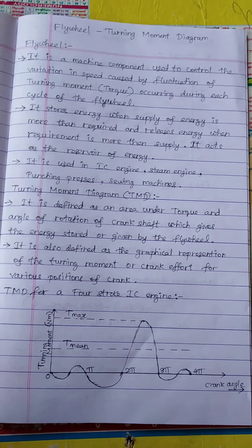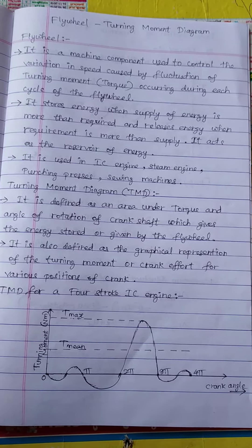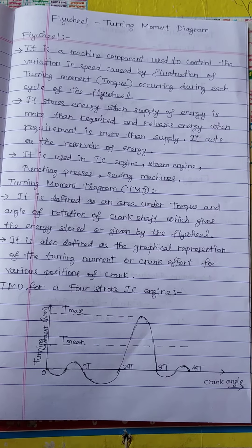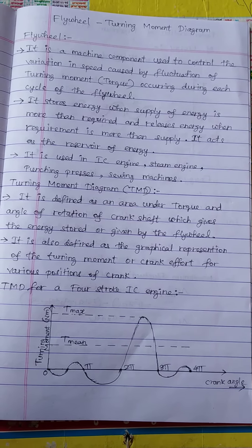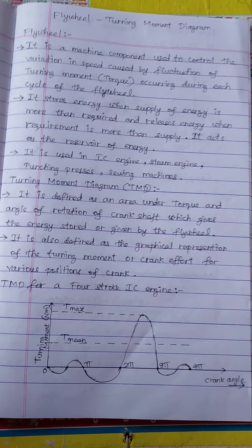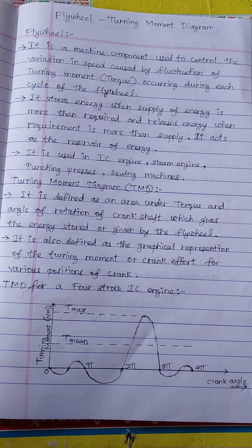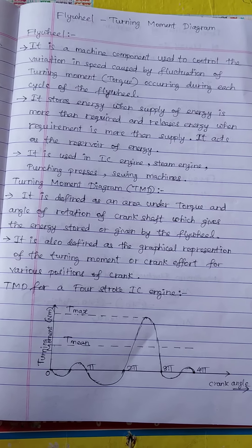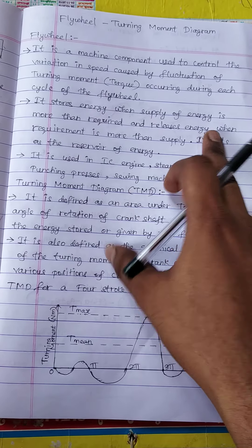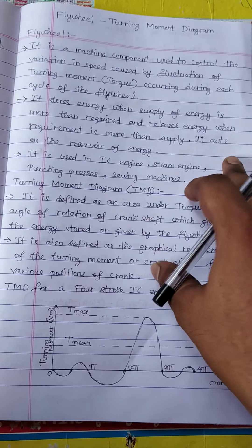If we have continuous power supply, then there is no fluctuation in torque. But in IC engine, we have only one power stroke, so for other strokes we don't have any power. So there is a fluctuation of torque and therefore a variation in speed. To get a constant speed or to control the speed, we have the flywheel, because flywheel stores energy when the supply of energy is more than required and releases energy when the requirement is more than the supply.